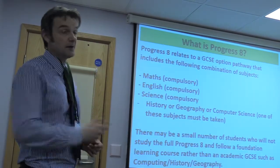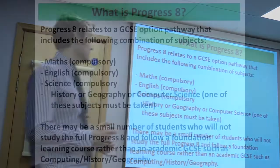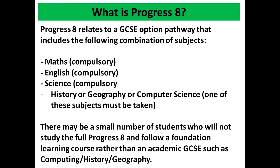The other pathway is the Progress 8 pathway. In a similar way to EBAC, they have to study Maths, English, and Science — those are the core subjects. But then they must also pick another, what the government call, Academic GCSE, and that's a choice from History, Geography, or Computer Science.